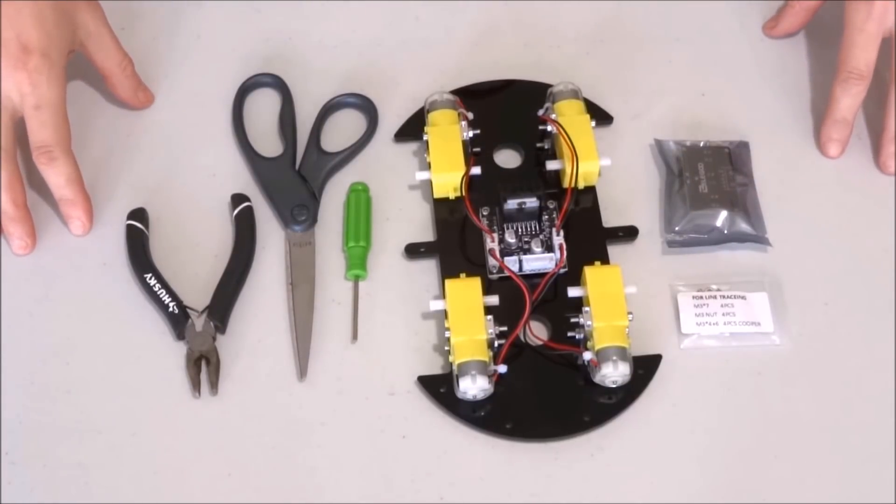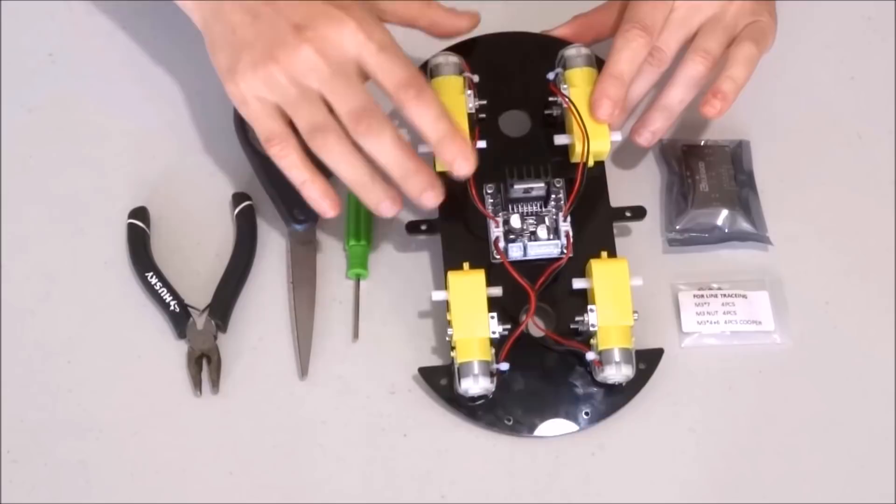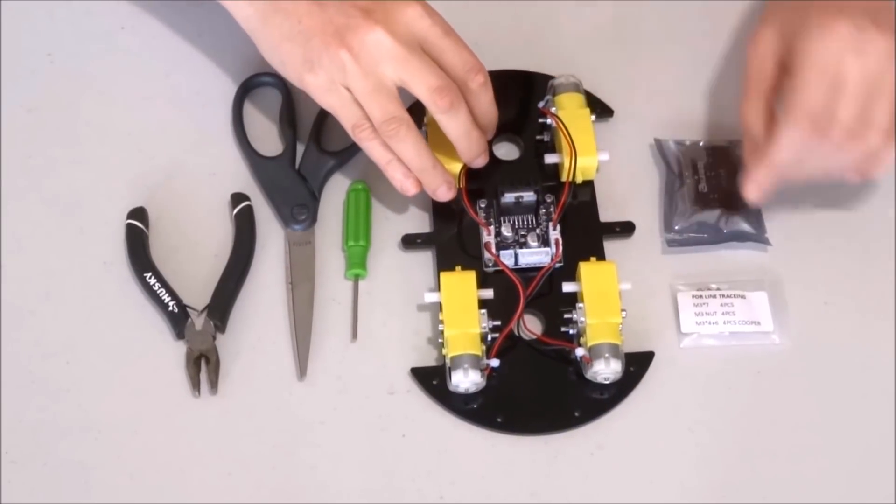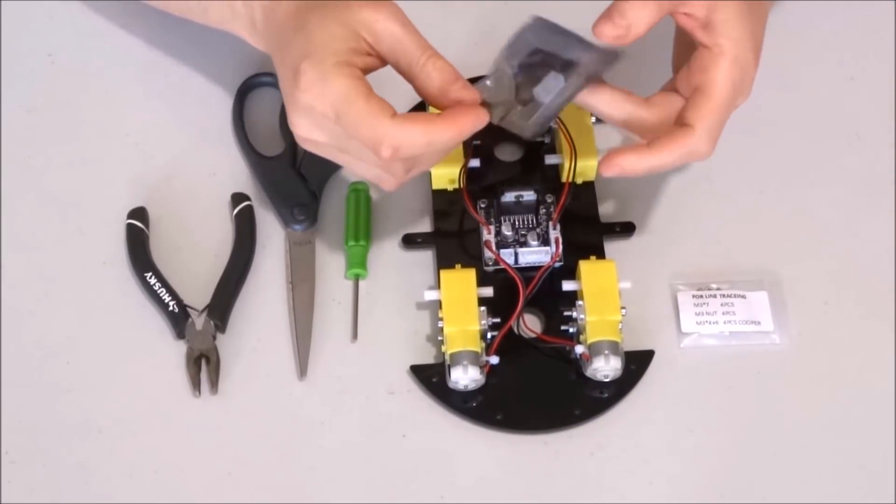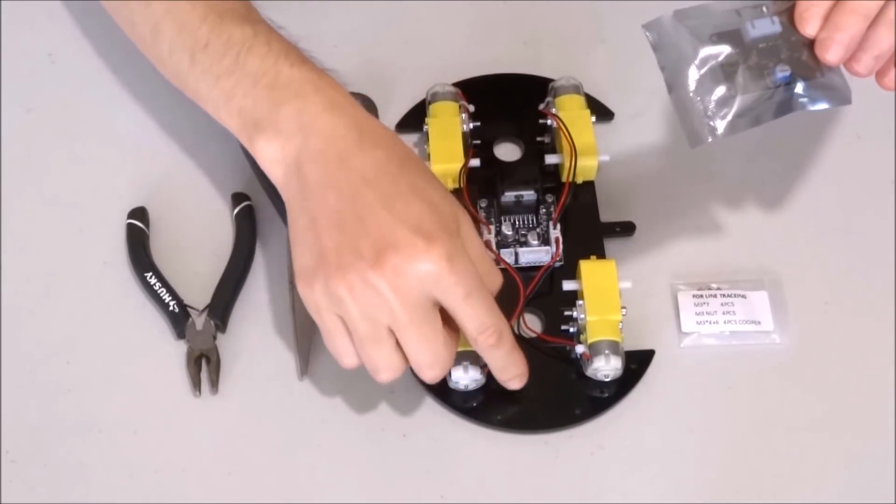Now to finish assembling the lower level of the chassis, I will go ahead and mount the line tracking sensor at the front of the chassis.